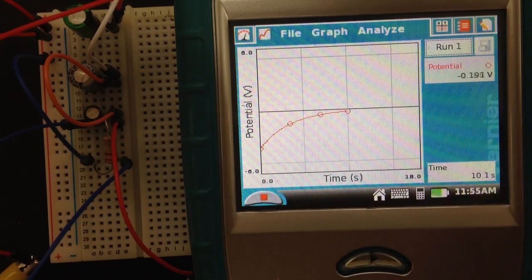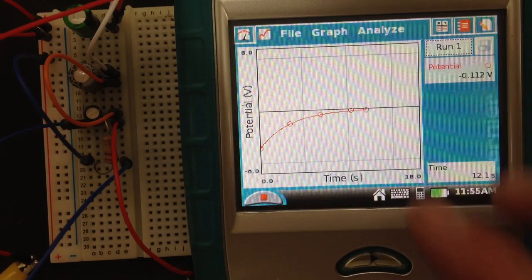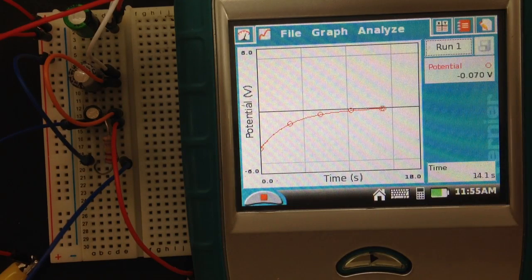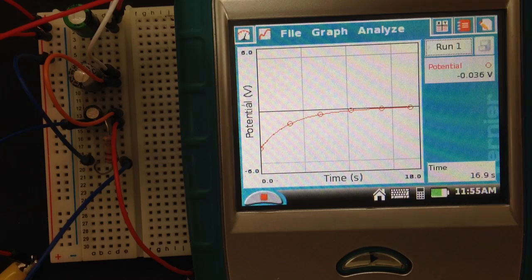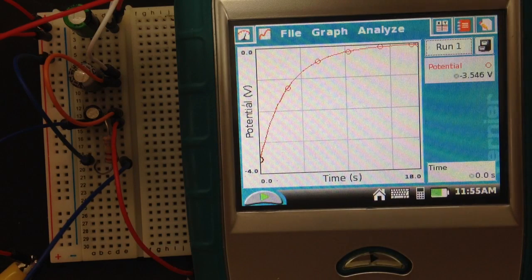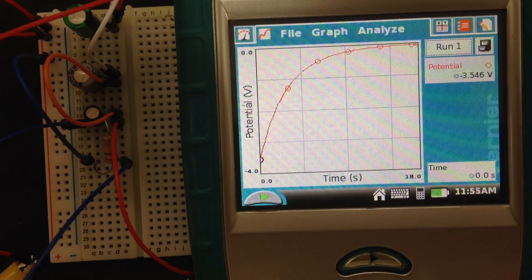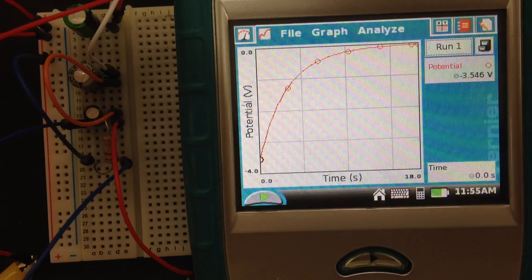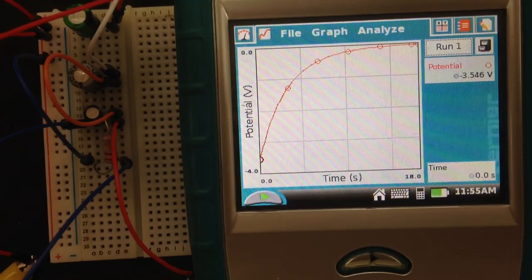look how smooth and sexy that is. That voltage behaves that way because those capacitors are discharging themselves, and they're running across that resistor, giving us a very nice potential-versus-time graph.